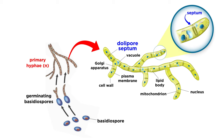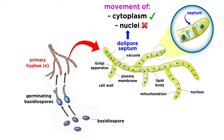We call this wall a dollypore septum. The term dollypore originates from the central barrel-shaped canal in the center of each septum. These dollypore septa are partitions along the length of hyphae that allow for the movement of cytoplasm, but block the movement of nuclei between compartments.